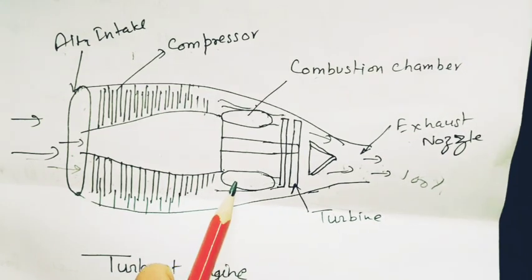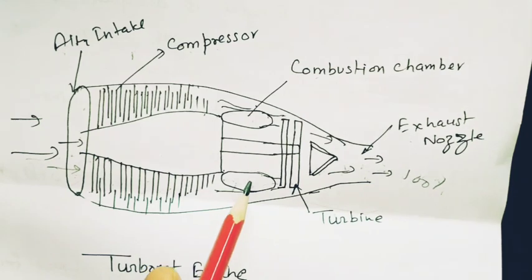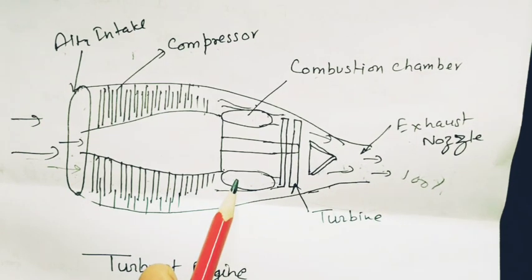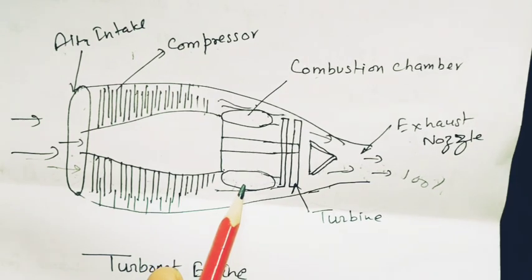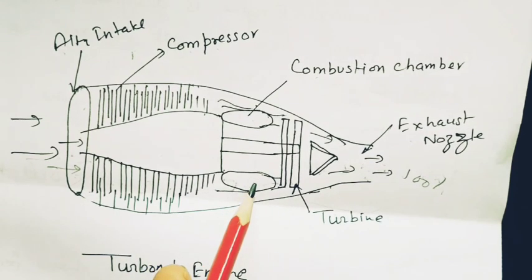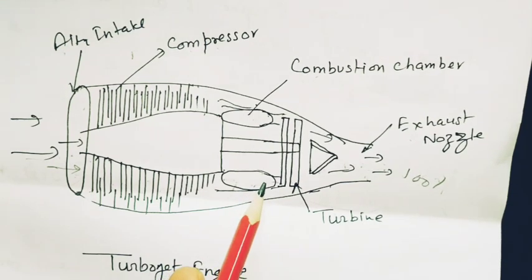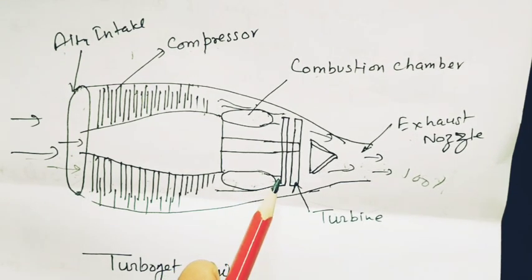In combustion chamber, fuel is added and ignition is provided through igniters, and air starts burning. It is also producing high thermal efficiency, and this mass of gases after burning goes to the turbine.